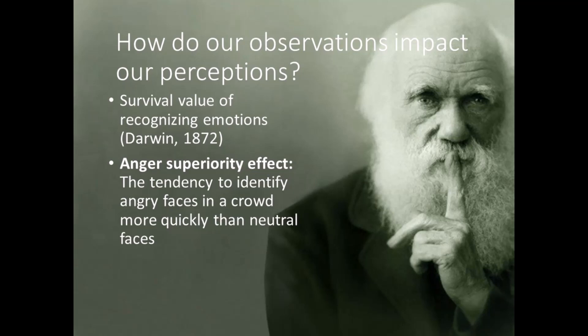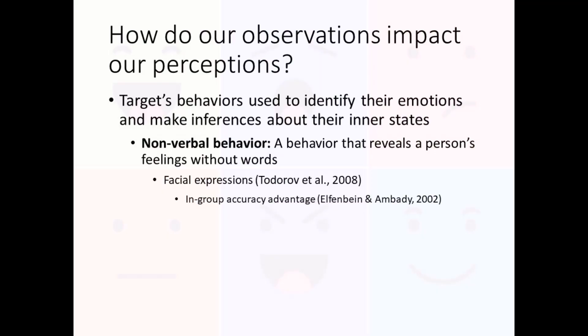More recently, social psychologists have found additional evidence to support Darwin's ideas. We are prone to the anger superiority effect, meaning we can more quickly identify an angry face in a crowd of people than a happy or neutral face. However, cultures vary in their nonverbal behavior norms. Cross-cultural research on the perception of emotion, like the study by Elfenbein and Ambady, suggests we are better at judging the emotions of people who share our culture than of those from other cultures. This creates what they call an in-group accuracy advantage.